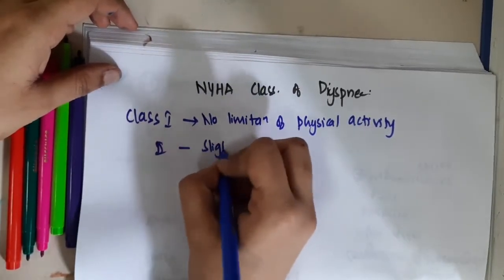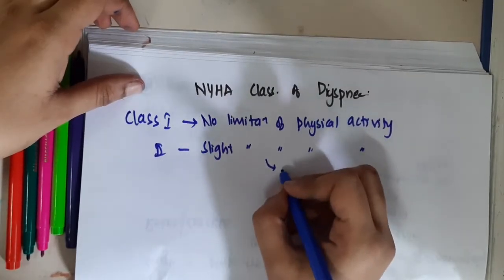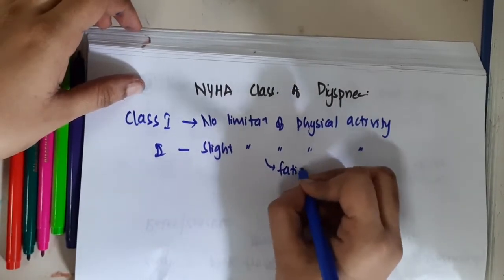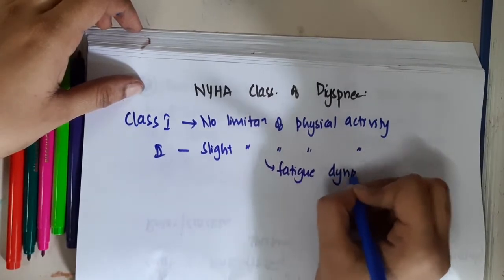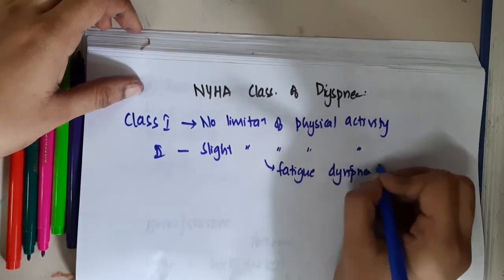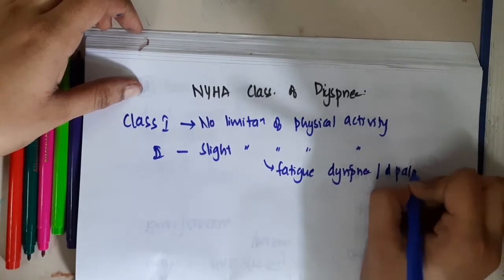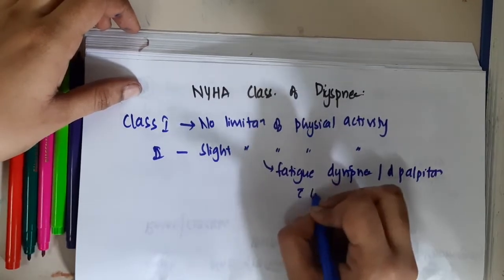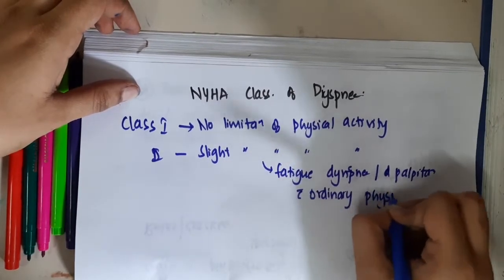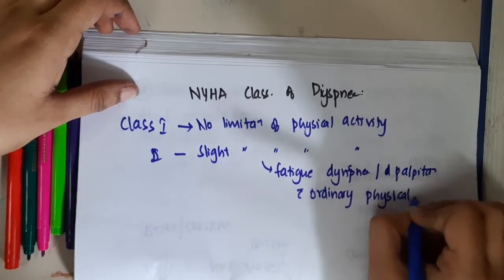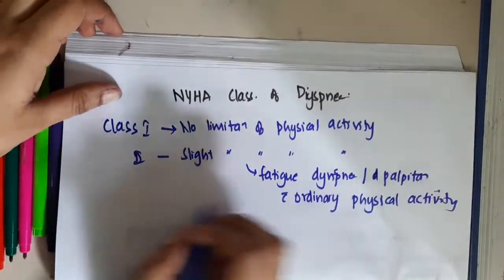In Class 2, fatigue, dyspnea, or palpitations are seen with ordinary physical activity. With ordinary physical activity, the patient will have dyspnea, fatigue and palpitations.